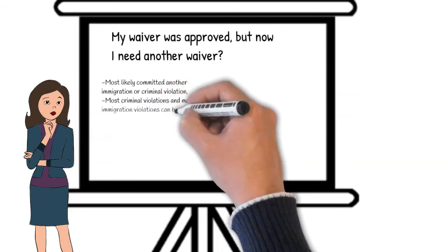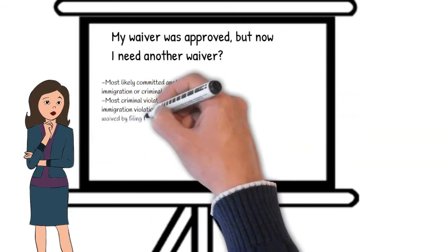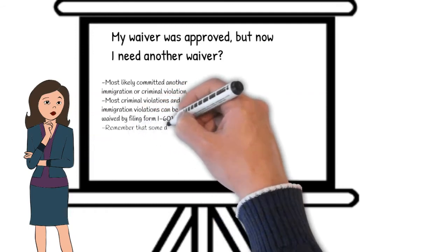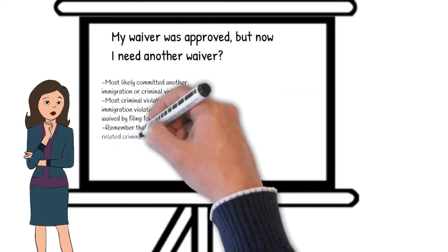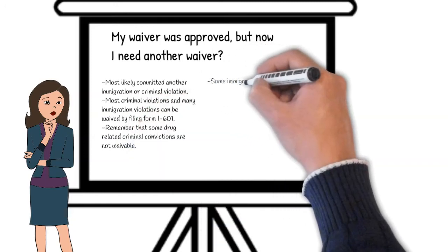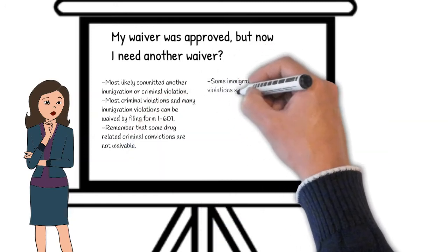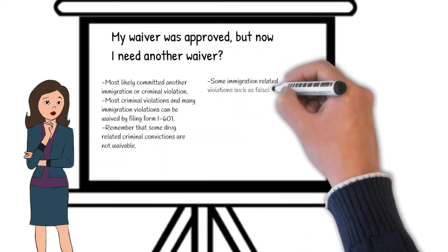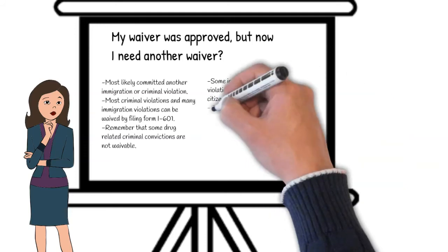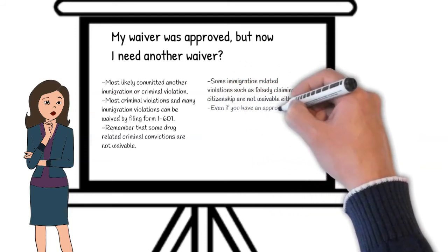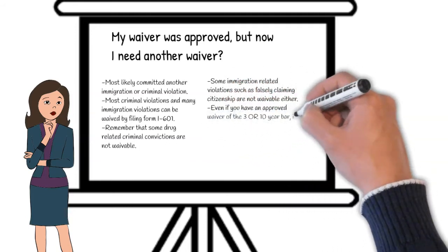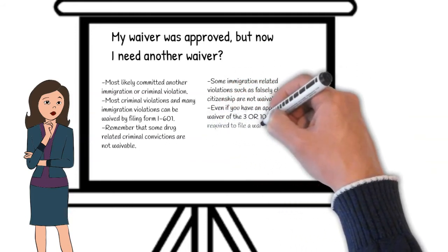This also means that the beneficiary will have to wait the processing period from outside the U.S. Keep in mind that there are criminal violations — such as many drug-related convictions — that cannot be waived. There are also some immigration violations that cannot be waived, such as falsely claiming U.S. citizenship. If there is no waiver available and the violation cannot be cured through the passage of time, the beneficiary will be permanently barred.